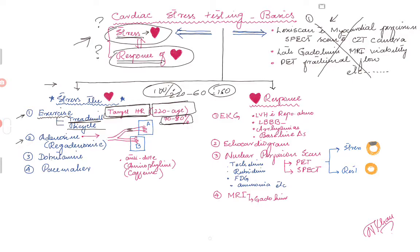Another way to stress the heart is by giving adenosine, which causes vasodilation. Nowadays we have an analog of adenosine called regadenoson, which has fewer side effects — this is what we call a Lexiscan. When you send a patient for a Lexiscan, you are asking for them to get regadenoson. Of course, if the patient can exercise, it is best to have them do that, and if they cannot reach their target heart rate, you can convert to the Lexiscan or regadenoson test.